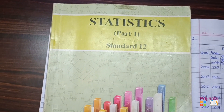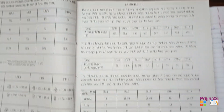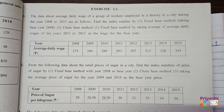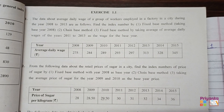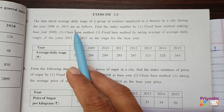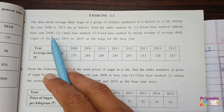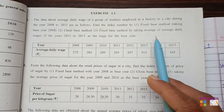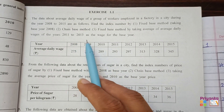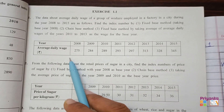Standard 12 Statistics, Part 1, Chapter 1. We'll start with Exercise 1.1, Question 1, given on page 15. The data is about the average daily wages of a group of workers employed in a factory in a city during the year 2008 to 2015. We need to find the index number by three methods as per the question.